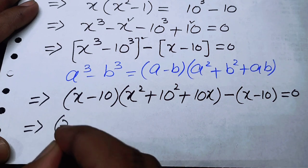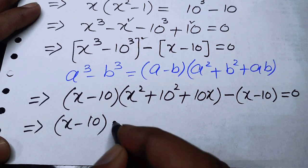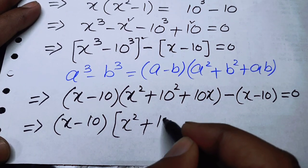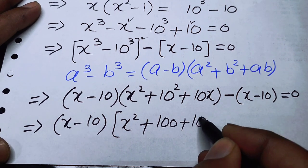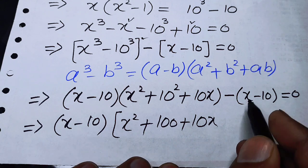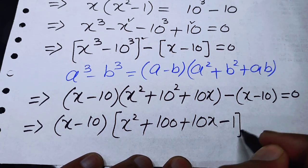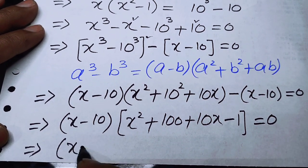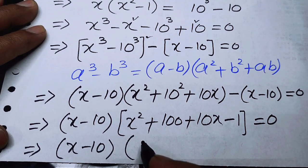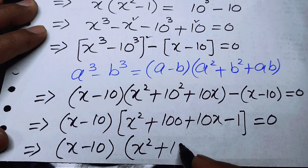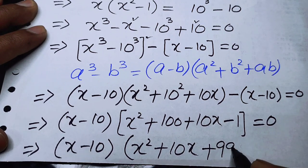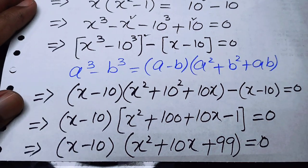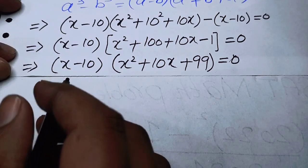Taking (x minus 10) common from both terms: (x minus 10)(x squared plus 100 plus 10x minus 1) equals 0. Simplifying, this becomes (x minus 10)(x squared plus 10x plus 99) equals 0.